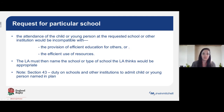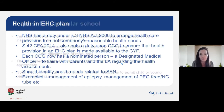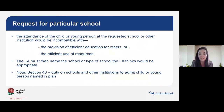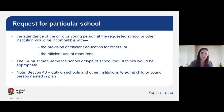If the local authority is suggesting that naming the school is incompatible with the efficient use of resources — i.e. it costs too much — then you should be asking for evidence as to what those costs are and how they compare to the local authority's proposed school. One other thing to say: once a school is named in an EHCP, the school must admit the pupil. The consultation period between the local authority and schools is for schools to confirm suitability, but whichever response the school gives, if they are named in the EHCP, they must admit the pupil.